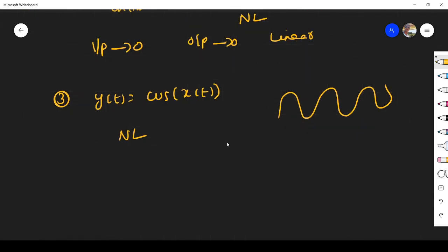We can check this one in another method also. Same method. When input is x = 0, what about output? y(t) becomes 1. Without input, it is producing output. Surely it is a nonlinear system.